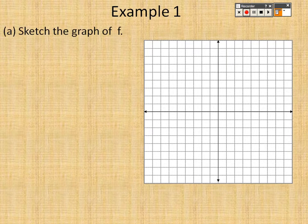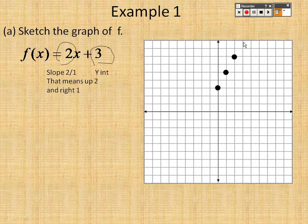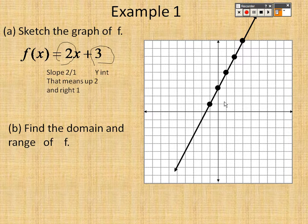Example one: sketch the graph of 2x plus 3. The plus 3 means I go up 1, 2, 3 and put the point right there — that's the y-intercept. The slope is 2 over 1, so I go up 2 over 1, up 2 over 1, up 2 over 1, and there it is.